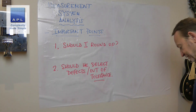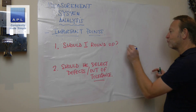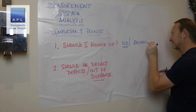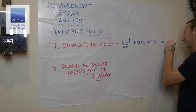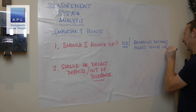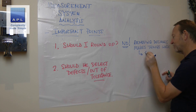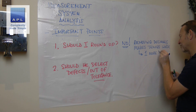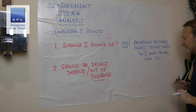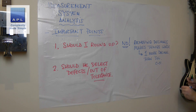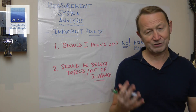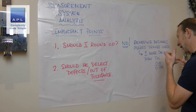Let's answer these two questions. In both cases the answer is no. Should you round up? No. If you remove decimal places, removing decimals makes things worse. In fact, the advice is you should always have one more decimal place than the tolerance. So if you are measuring hundredths of a millimetre as your tolerance, your measurement system should have an extra place and measure thousandths of a millimetre. That's really important — it helps to get good R&R.